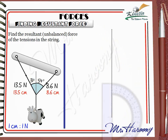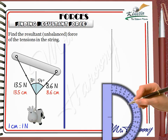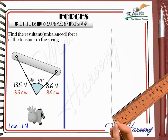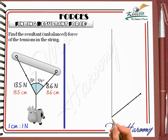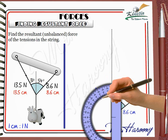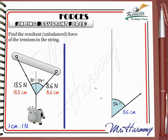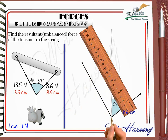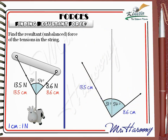To draw the 8.6 N force, use your protractor to measure the angle of 54 degrees. Get the ruler and draw an 8.6 cm line representing the 8.6 N tension force, respecting the angle of 54 degrees. Then get the protractor again and find the angle of 31 degrees on the other side of the vertical reference line. Draw a line of 13.5 cm to represent the 13.5 N force, at an angle of 31 degrees with the vertical line.